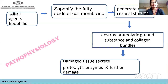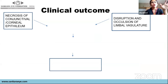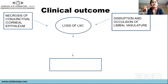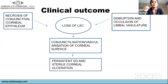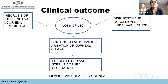Ultimately, whether acid or alkali, two aspects occur: necrosis of the conjunctival and corneal epithelium, and disruption or occlusion of the limbal vasculature. Both lead to loss of limbal stem cells, either partial or complete. Once stem cells are lost, there is conjunctivalization of the cornea plus neovascularization of the corneal surface. With absence of the normal corneal epithelial phenotype, it progresses to persistent epithelial defect, sterile corneal ulcer, stem cell deficiency, and ultimately an opaque vascularized cornea — the ultimate sequel of chemical injury.